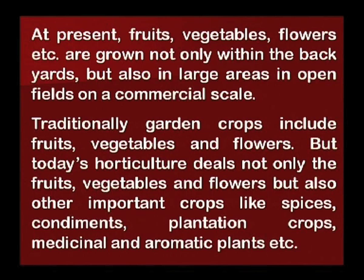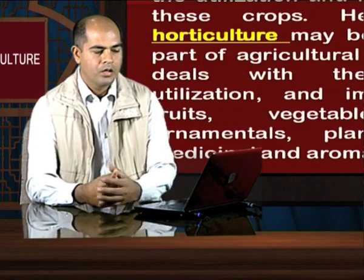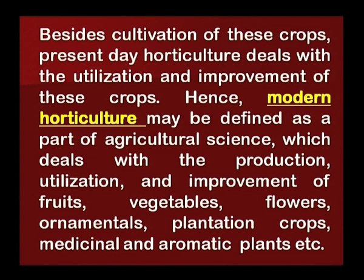Traditionally, garden crops include fruits, vegetables and flowers. But today's horticulture deals not only with fruits, vegetables and flowers but also other important crops like spices, condiments, plantation crops, medicinal and aromatic plants, etc. Presently, horticulture has grown largely to the commercial scale. Present day horticulture also deals with the utilization and improvement of these crops. Hence, we can define modern horticulture as a part of agricultural science which deals with the production, utilization and improvement of fruits, vegetables, flowers, ornamental and plantation crops, medicinal and aromatic plants, etc.